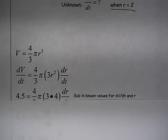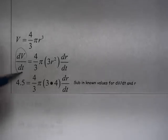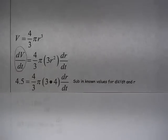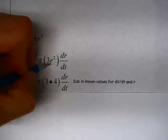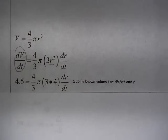And then I can substitute in the known values. I know dV/dt. I was told it was 4.5. I know the radius at the current time is 2. So I can make both of those substitutions and then solve for dr/dt.